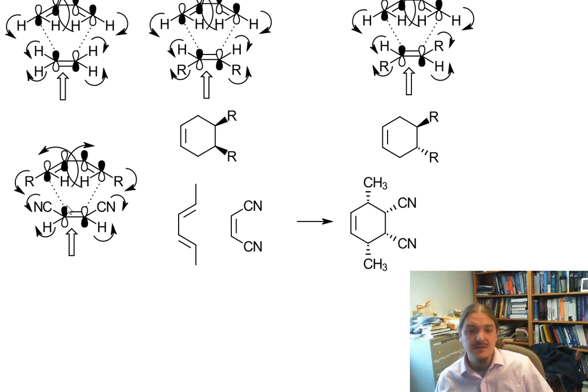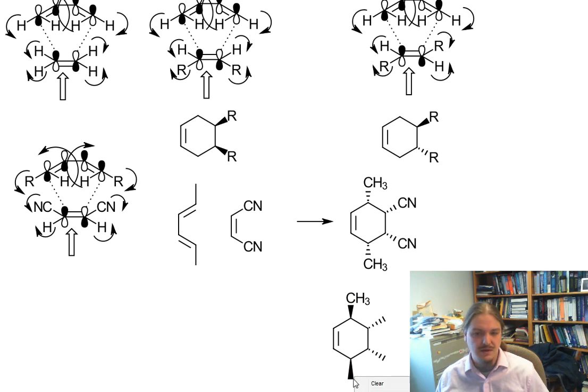At the very least, you should be able to predict that the nitriles are going to be cis to each other and the methyls are going to be cis to each other. If you had thought you had it figured out and you drew a different diastereomer where the methyls were in the opposite direction from the nitriles, that's actually pretty good. I know one extra thing about this reaction: I know that this outcome is actually more likely, even though it looks like there might be more steric hindrance in the product. But even if you got to this particular diastereomer, I'm cool with that too.